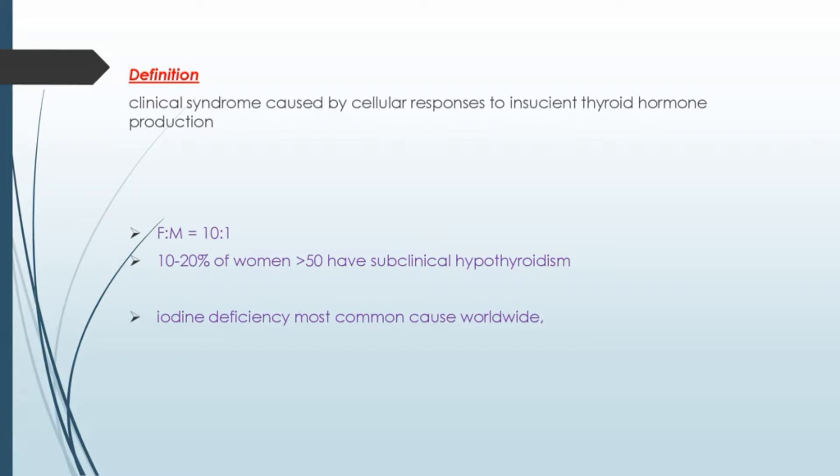The female to male ratio is 10 to 1. Ten to twenty percent of women greater than 50 have subclinical hypothyroidism. Iodine deficiency is the most common cause worldwide.